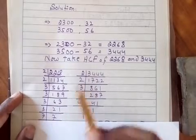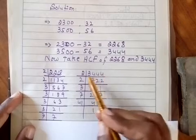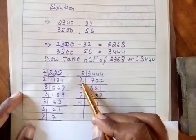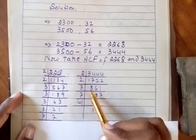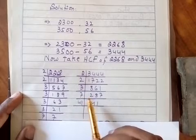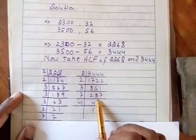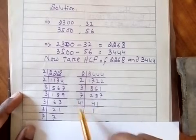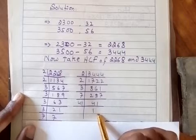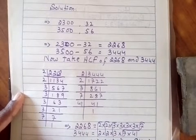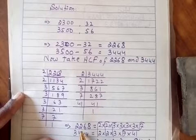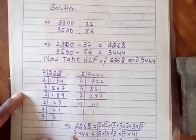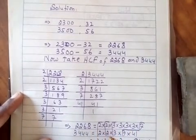For 3444, we divide by 2 to get 1722. Again divide by 2 to get 861. 861 divided by 3 gives 287, then by 7 gives 41, which is prime.